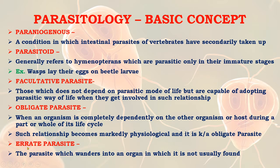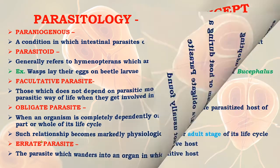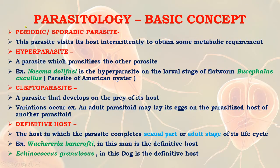An erratic parasite is one which wanders into an organ in which it is not usually found. A periodic or sporadic parasite is one that visits its host intermittently to obtain some metabolic requirement.